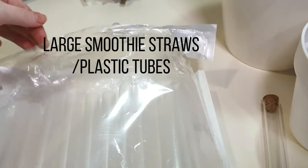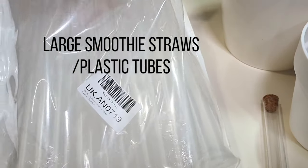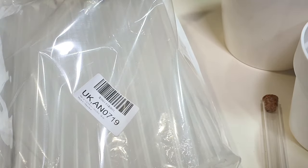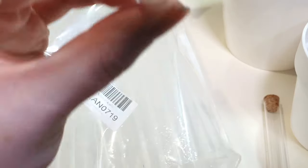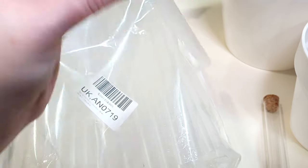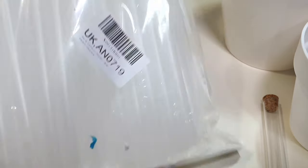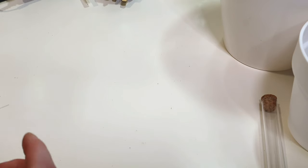The smoothie straws are going to be the easiest, cheapest way to do it. But for a more professional look, I'm also trying out some plastic tubes which require a little bit more adjusting and some extra steps, but they are a little bit more long-lasting and hard-wearing.